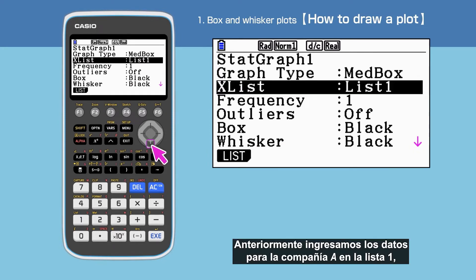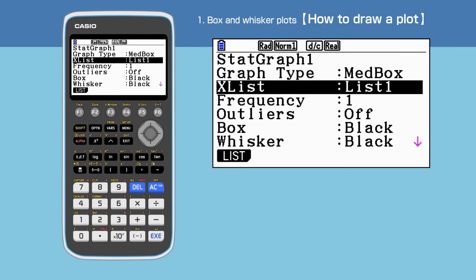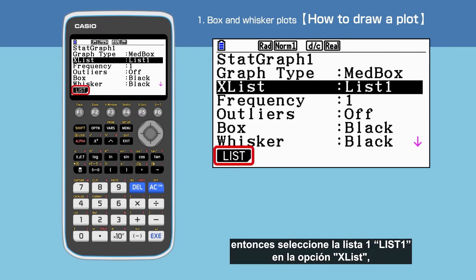We entered the data for company A in list 1 earlier. So choose list 1 for xList.